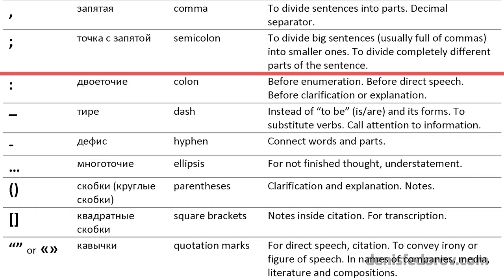Semicolon — точка с запятой in Russian — we use the same as in English, mainly to divide a sentence into parts when we do not want to place a period, or when a simple comma cannot be used. Semicolon is also needed to divide parts of sentences that already contain commas, where another comma would cause confusion. It is also used when the parts of the sentence are completely different with no connection between them. So we use semicolon the same in Russian and English.